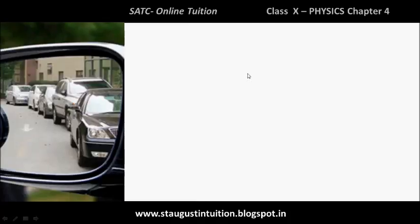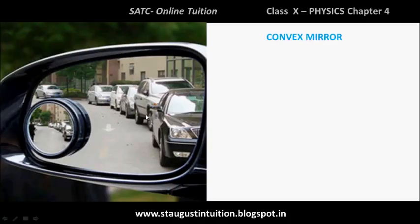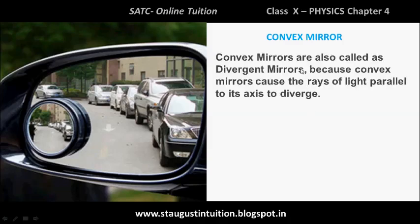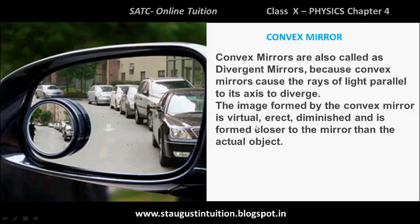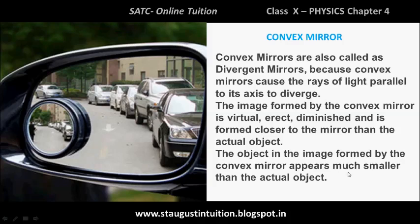Similarly, convex mirrors are called divergence mirrors because a convex mirror causes rays of light parallel to its axis to diverge. The image formed by a convex mirror is virtual. The object in the mirror appears much smaller than the actual object — objects are closer than they appear.